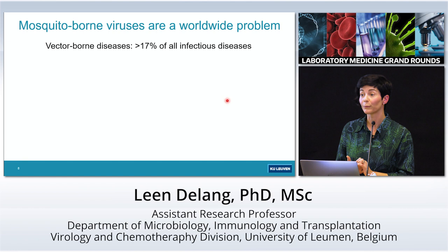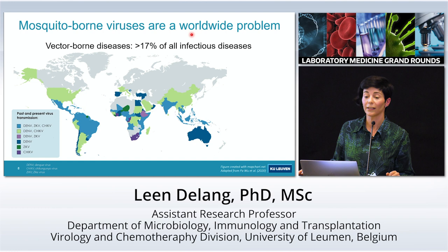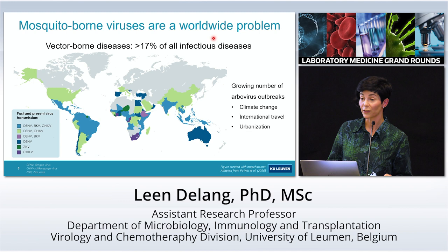Why is it important that we talk about mosquito-borne viruses? First of all, it's a worldwide problem. Vector-borne diseases account for more than 17% of all infectious diseases. In this map you can see the transmission of the three most prevalent arboviruses at the moment: dengue virus, chikungunya virus, and Zika virus. They're present all over the world, including in more temperate regions like Europe and the United States, and there's a lot of co-circulation as well.